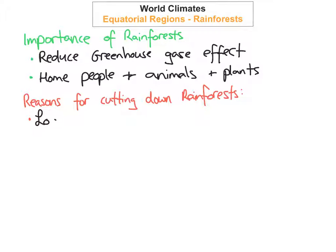The first reason for cutting down the rainforest is logging, because wood is worth a lot of money and many people are deciding to chop down the trees so they can sell the wood. The second reason is cattle ranching — because meat is so important to human lives, many people are clearing acres and acres of rainforest to put cattle on to graze, and then selling the meat for profit.